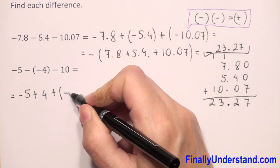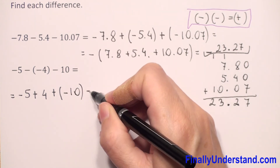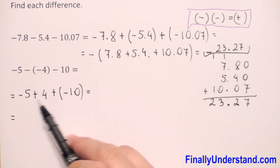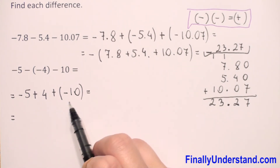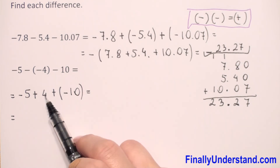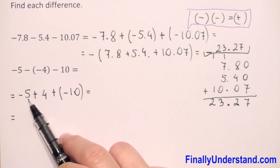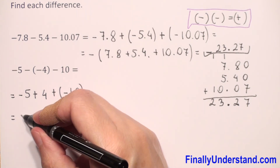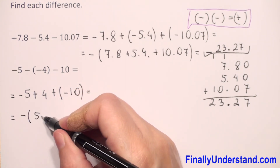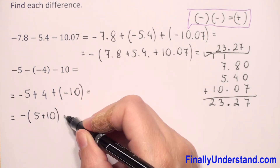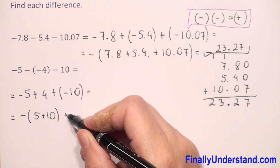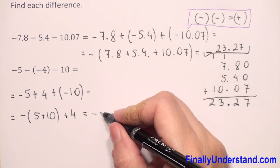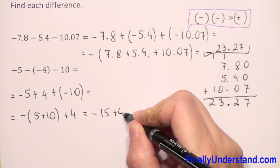So we have positive four, and again subtraction changes to addition of the opposite, so the opposite of 10 is negative 10. We can add the two negative numbers first: copy the negative sign and add five and ten, then handle positive four.